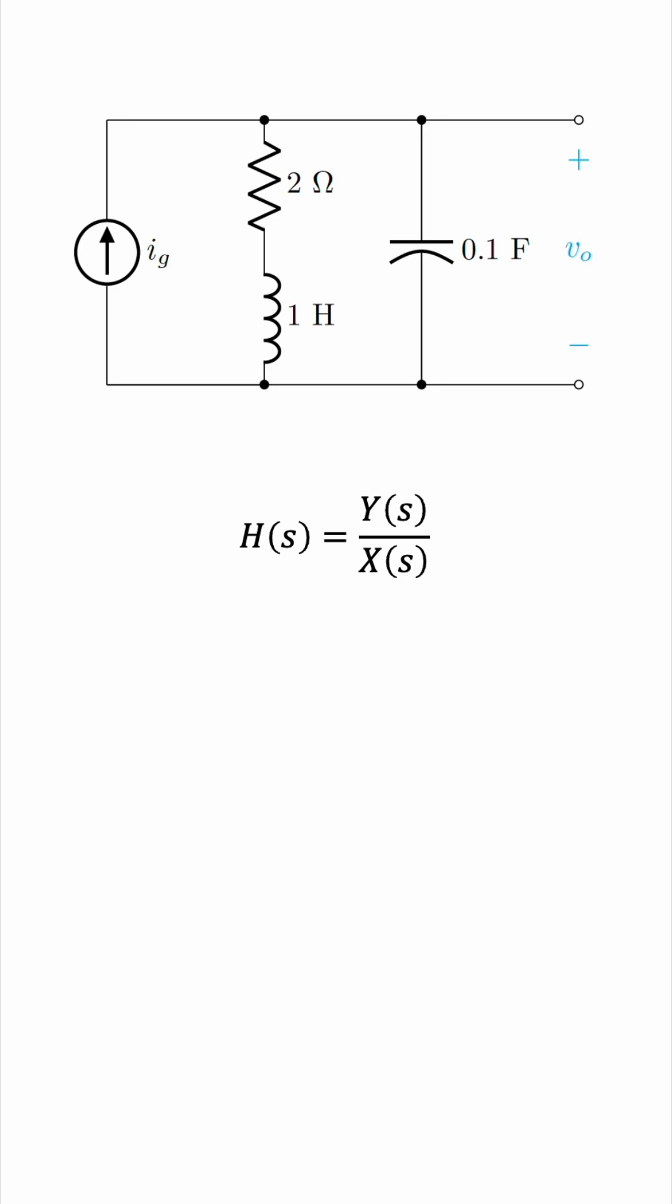In this circuit, the output is clearly VO, the output voltage, and the input is IG, the current source. So in the S domain, this will be capital VO of S over capital IG of S.